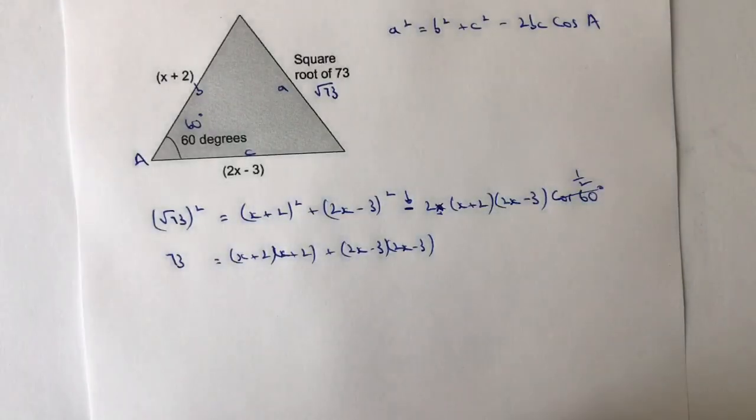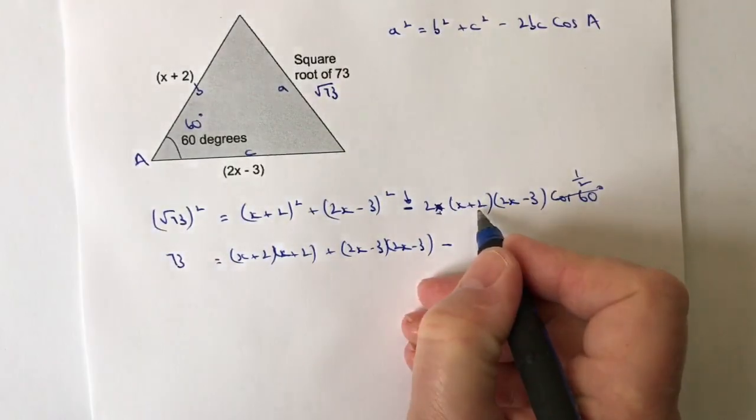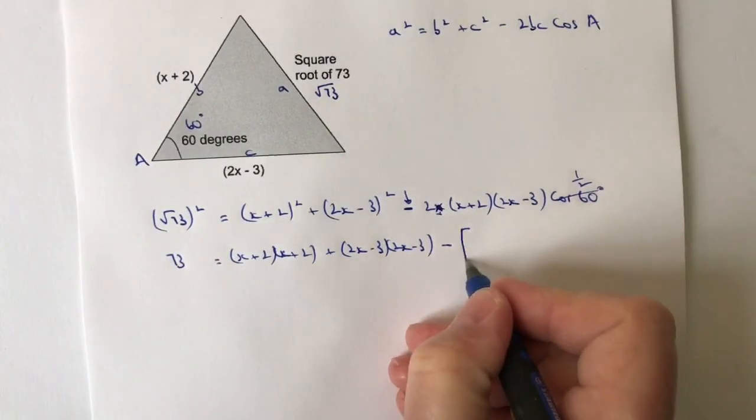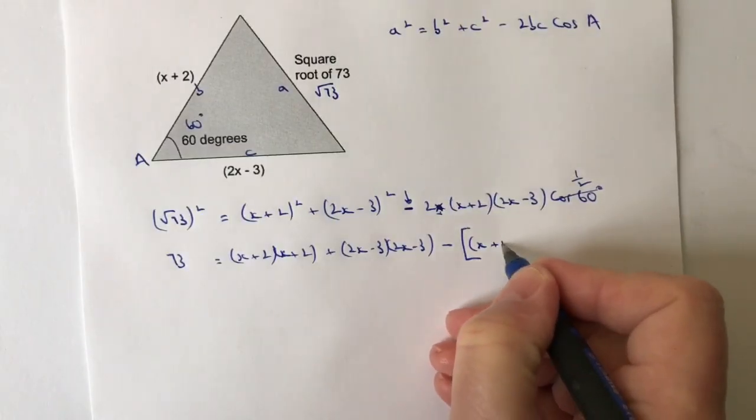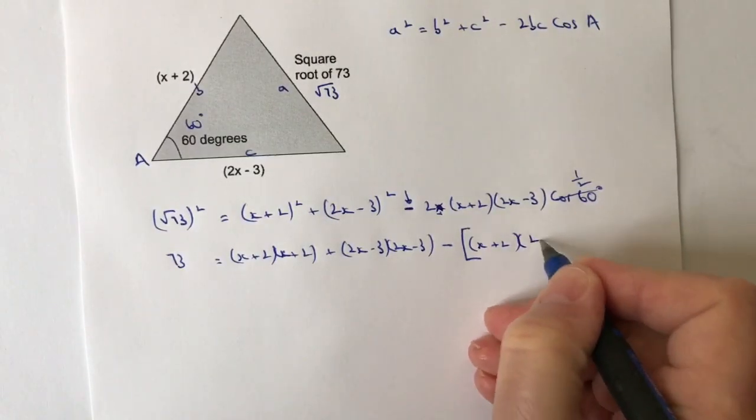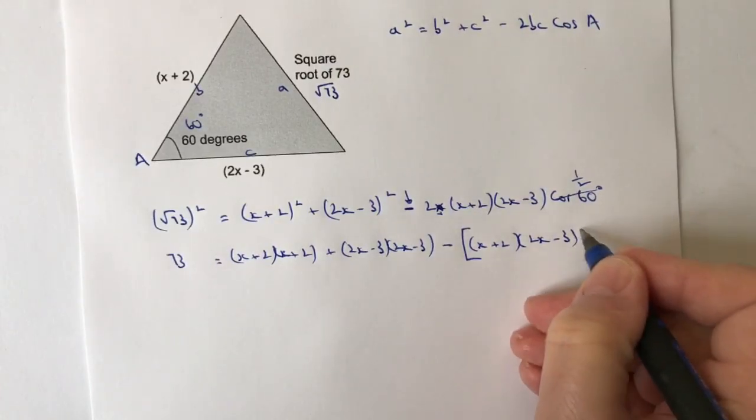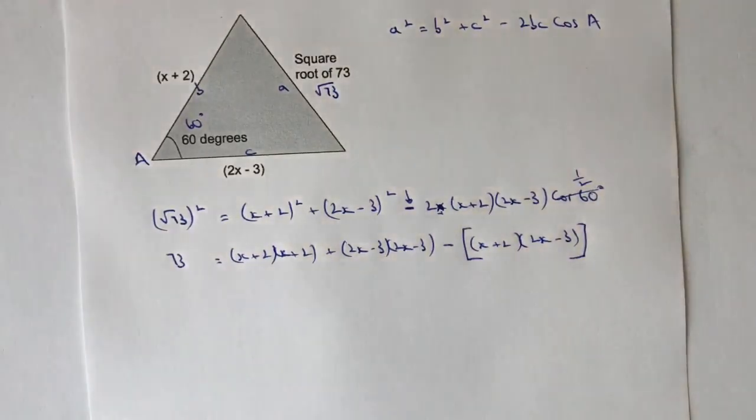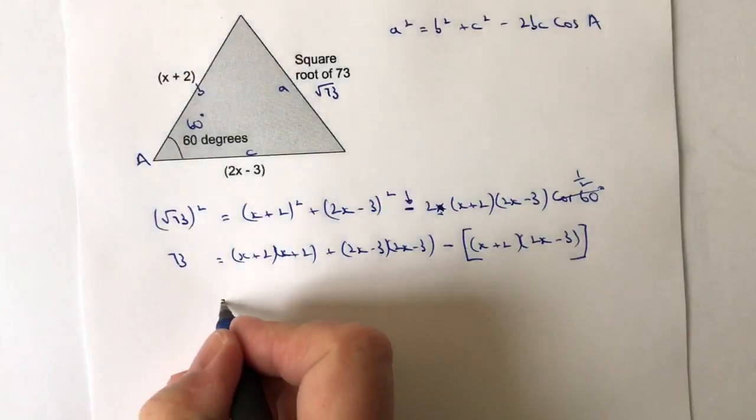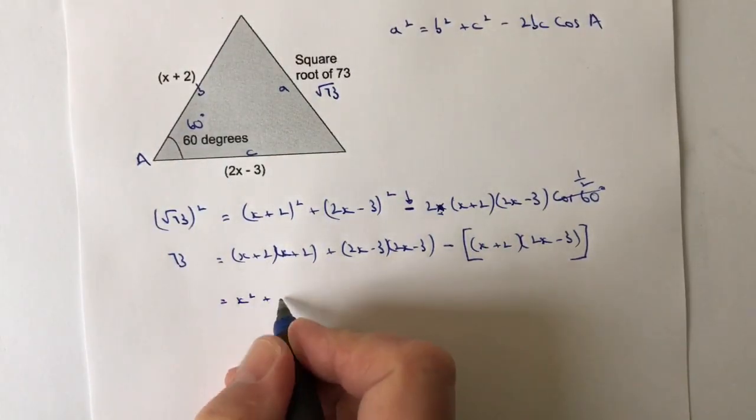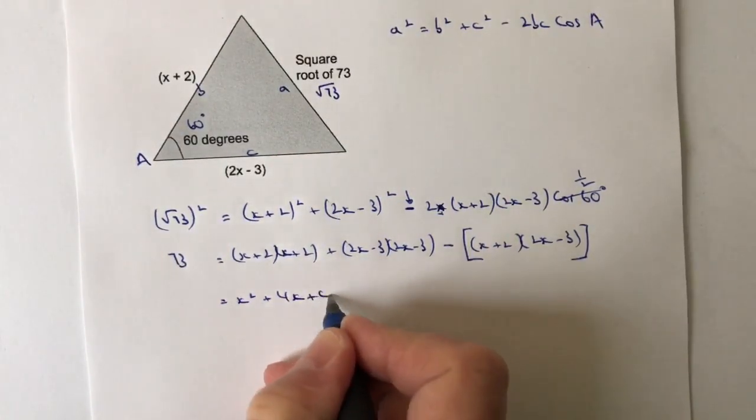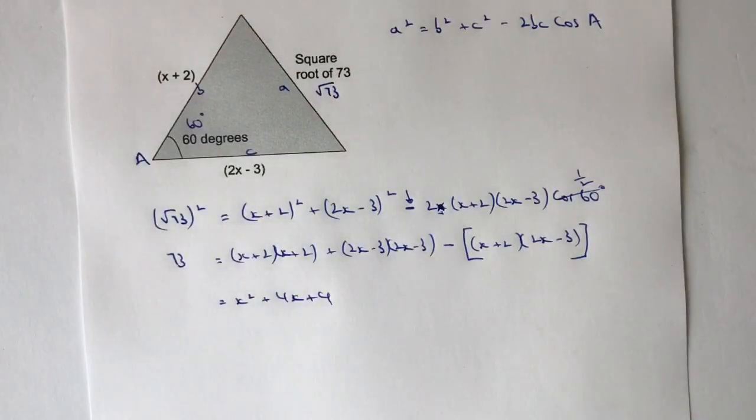But what I do need to be concerned about is this minus sign here. The minus sign is going to cause me a little bit of a problem if I'm not too careful. But I can certainly get rid of the 2 and I can get rid of the cosine of 60 degrees. So let's put this x plus 2 times 2x minus 3 into square brackets, and that just reminds me that this minus is going to affect everything within those brackets. So let's now start working through each of these in turn. I've got x plus 2 times x plus 2, that's going to be x squared plus 4x plus 4.